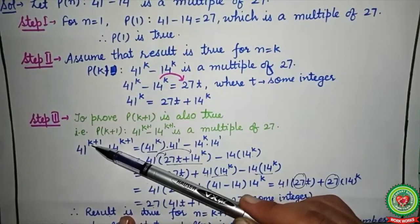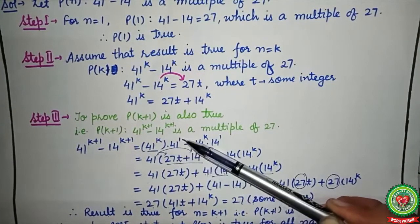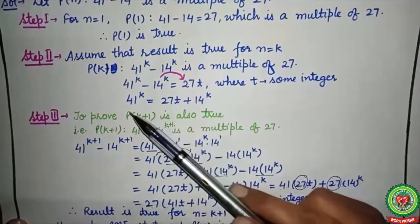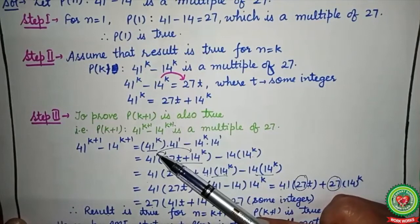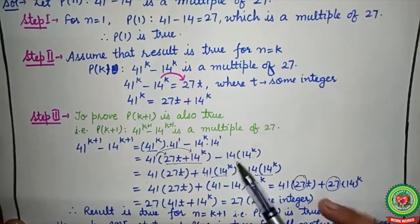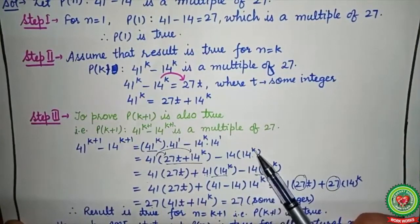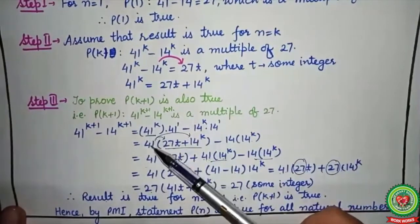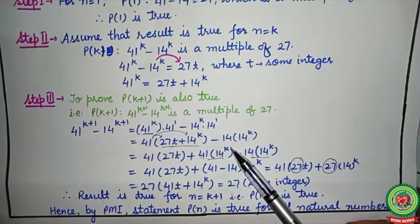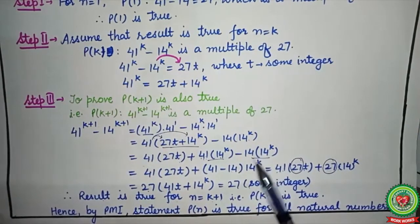Since terms share the same base, we separate the powers: 41^k · 41 − 14^k · 14. From Step 2, substitute 41^k = 27t + 14^k. Writing this in, we get (27t + 14^k)·41 − 14^k·14. Expanding the bracket gives 41·27t + 41·14^k − 14·14^k. The second and third terms both contain 14^k as a common factor.